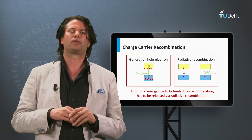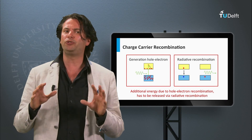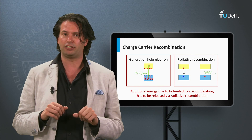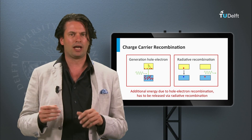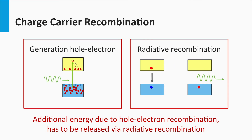Secondly, we have to consider that we do not fully utilize the band gap energy for the open circuit voltage. As discussed earlier this week, the maximum open circuit voltage is limited by the recombination of charge carriers. In reality, we can have three charge carrier recombination mechanisms: radiative, Auger, and Shockley-Reed-Hall. In the case of the Shockley-Queisser limit, only radiative recombination is considered.